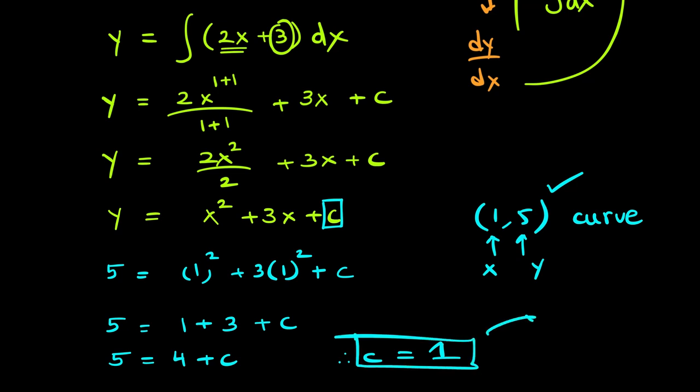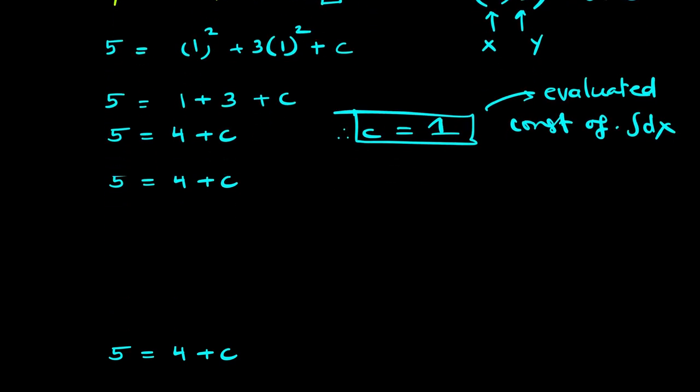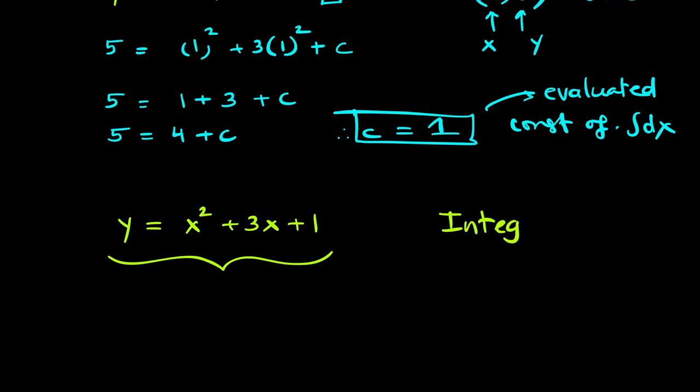So, this is the first time that we have evaluated the constant of integration using these two points (1,5). Therefore, the equation comes out to be y equals x square plus 3x plus 1. So, that is how we use integration and we find the equation of a curve based upon the gradient function.